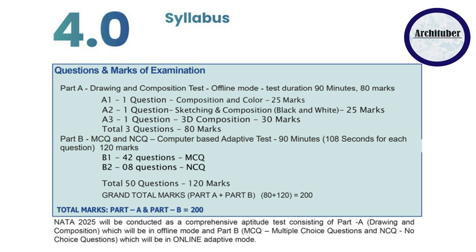The first question is A1 — composition and color, which is a 2D composition, so make sure you are practicing that. A2 is sketching and composition, which is almost black and white — either you will get an object, or you can have a scenario or scene. Question number three is A3 — 3D composition, introduced last year, where you are given a kit and you have to make a 3D composition. It is a very easy and scoring question, so prepare for composition and learn about different compositions.